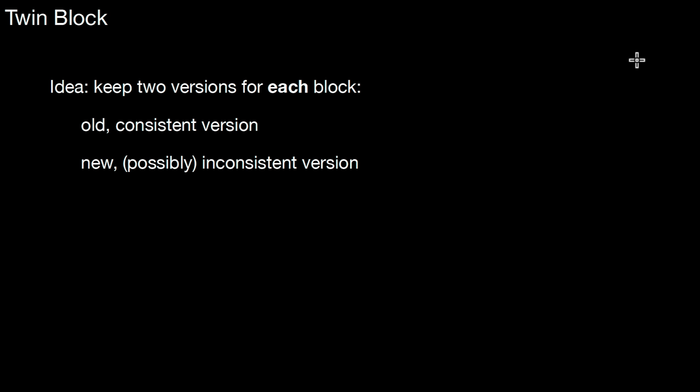The easiest method implementing indirect write or deferred update, as we also called it, is TwinBlock. The idea in TwinBlock is really easy. You keep two versions for each block - an old consistent version and a new possibly inconsistent version. In addition to that, you have an atomic switch indicating which of those versions is currently considered the consistent version. So the roles of those two versions change in the method.